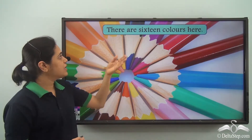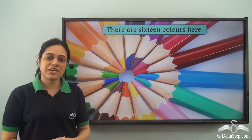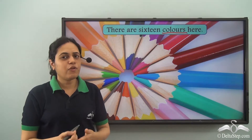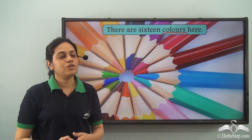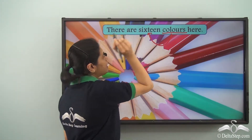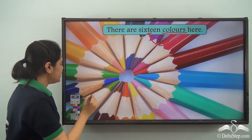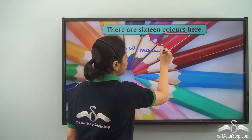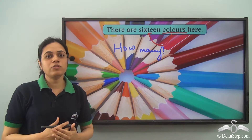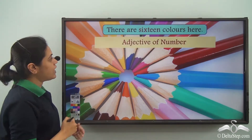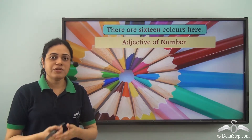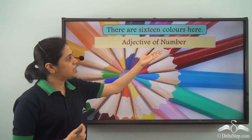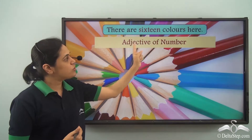Now let us look at this sentence: 'There are sixteen colors here.' What is the adjective here and what is the type? Colors is the noun, and the word describing this noun is sixteen. Sixteen is telling us how many colors are here — it is telling us something about the number of colors. So sixteen is an adjective of number.